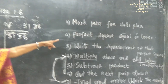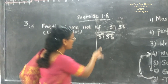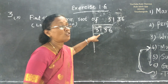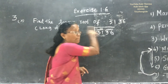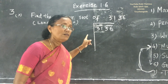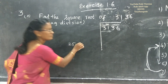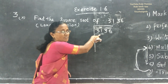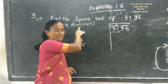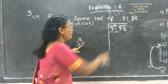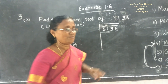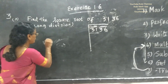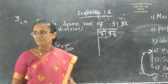Next, find the perfect square equal to or below the first pair. For the first pair 31, find the perfect square which is equal or below it. 25 is there, 16 is also there, but the condition is which is nearer — so we choose 25, since it is the closest perfect square below 31. The square root of 25 is 5. Do you follow? Yes, ma'am.